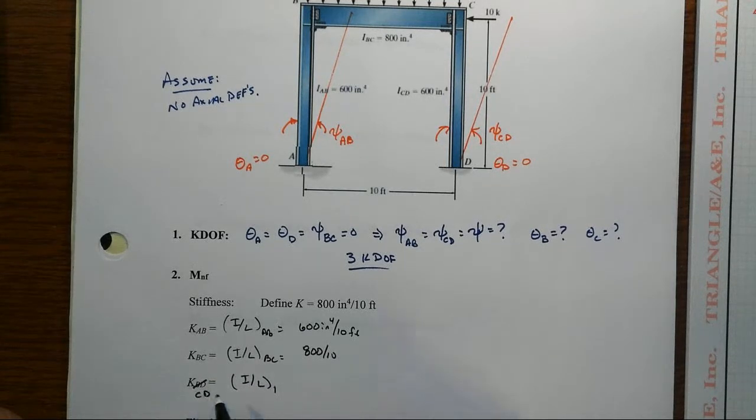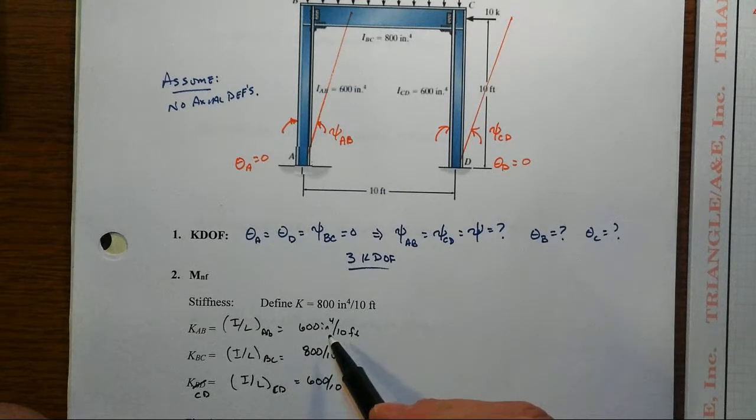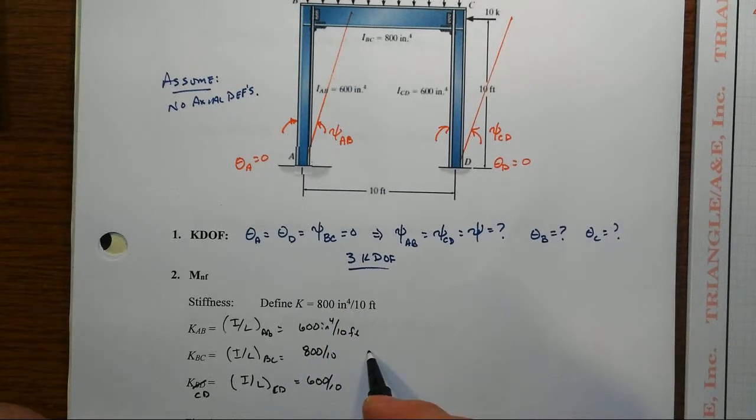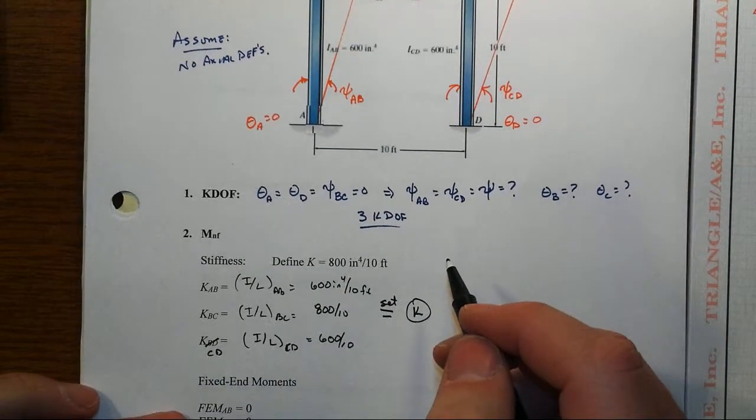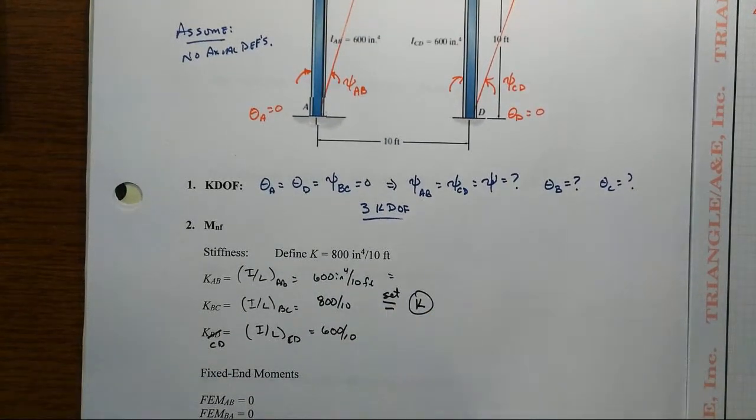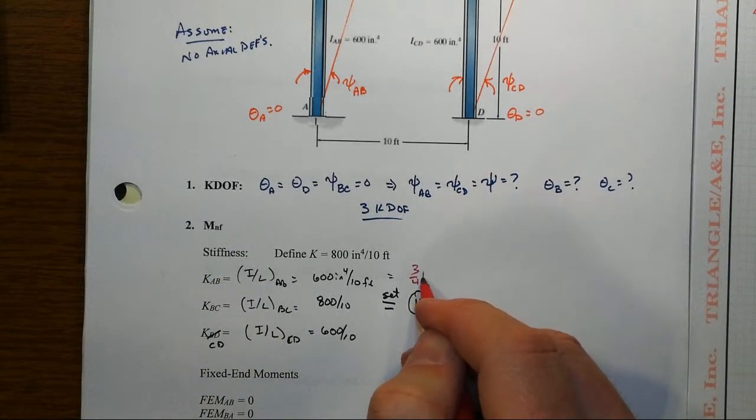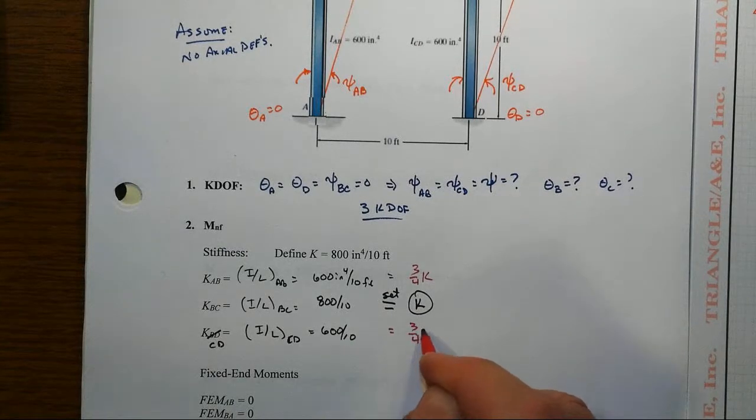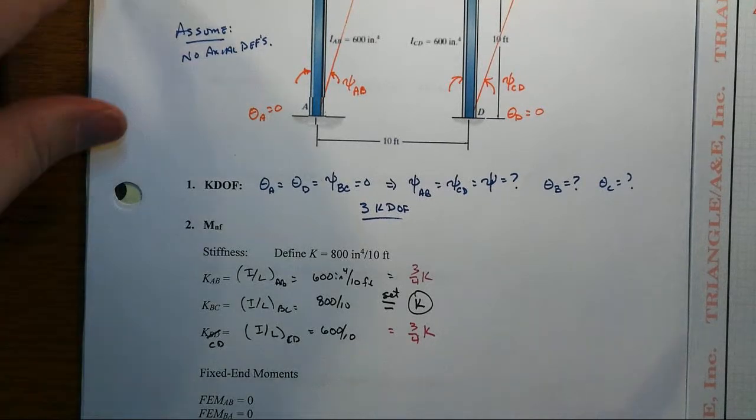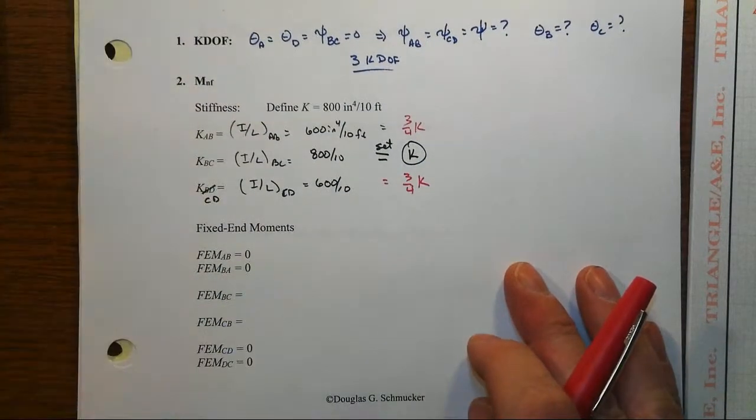And that will be then equal to 600 over 10. So they all have the same length, and as that is the basis, let's define K to be 800. That means we're setting K_BC equal to K, and that means that then our K_AB will be equal to 3/4 of K, as will K_CD be 3/4 of K. Now the only member that has directly applied loads to them is the beam.